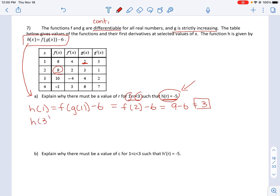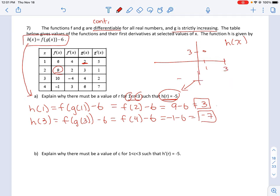So h(3) is f(g(3)) minus 6. g(3) is 4, so this is f(4) minus 6. And f(4) is negative 1, so this gives me negative 7. Notice that h(1) is 3 and h(3) is negative 7. We don't know what h(x) looks like, but here's the idea: we know at 1 it's 3, and at 3 it's negative 7.